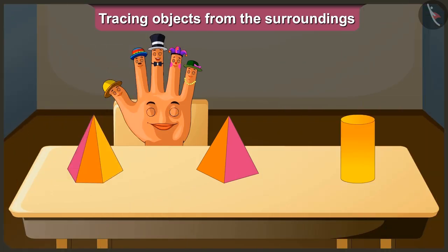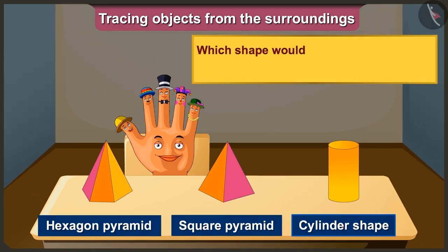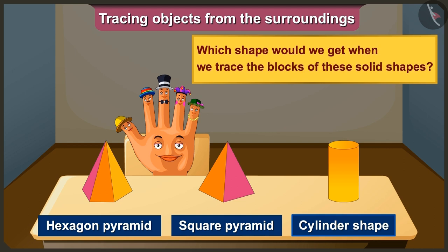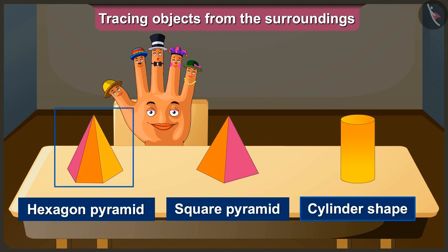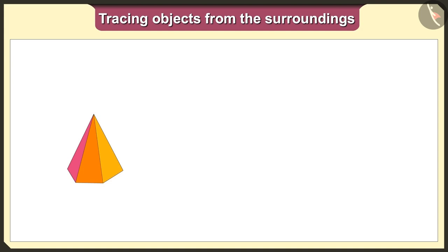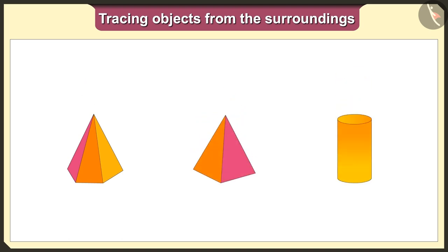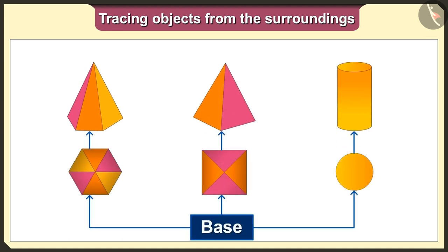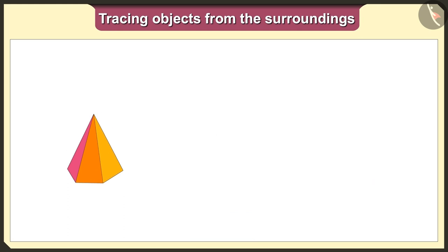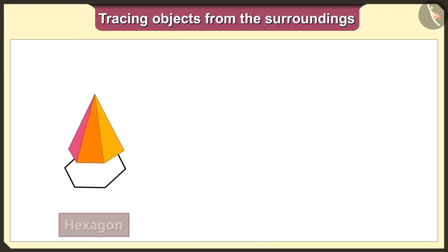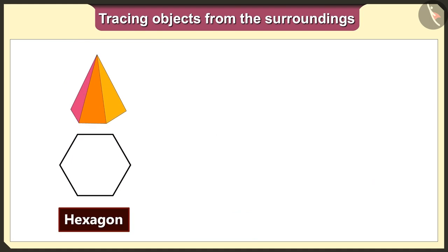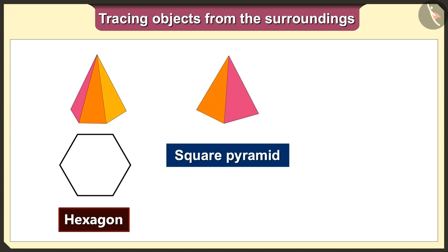Friends, did you practice tracing objects? So now tell me, which shape would we get when we trace these solid shaped blocks? First of all, we will keep a hexagon pyramid on a paper and trace it. The base of this hexagon pyramid is a hexagon. When we trace any object, the shape we get will be the same as the base. So when we keep this hexagon pyramid on paper and trace it, we will get the hexagon shape.